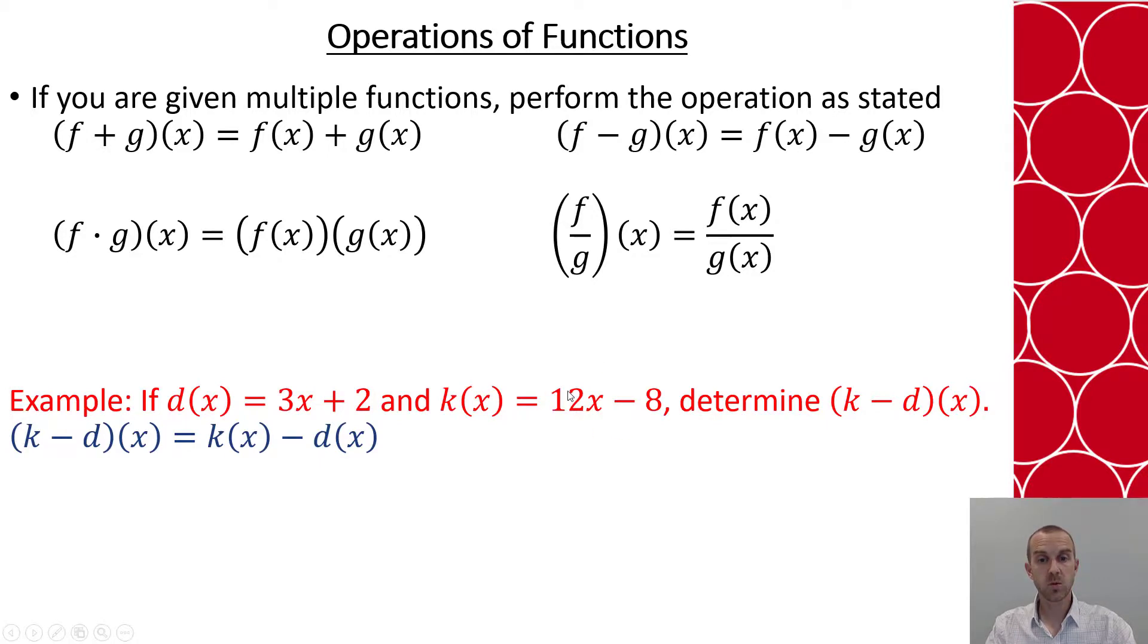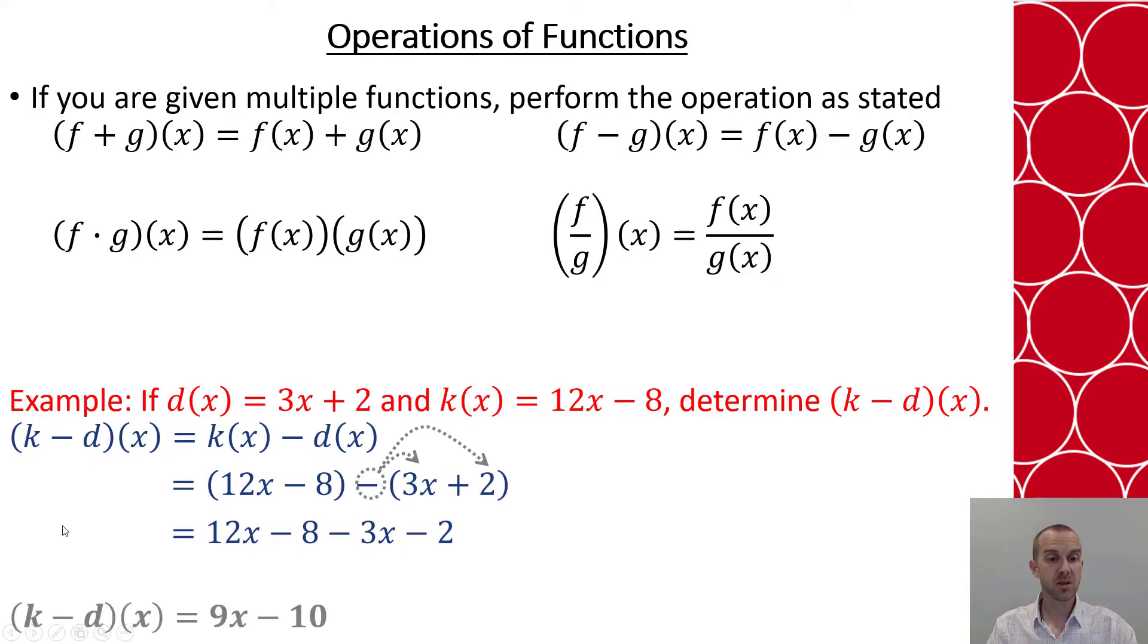Now I'll say, okay, k function, 12x - 8. d function is the 3x + 2. Now I'm going to simplify my expression. First thing, distribute that negative to both those terms. Now I have 12x - 8 - 3x - 2. I combine like terms and this should give me 9x - 10 because 12x - 3x is 9x. Negative 8 minus 2 is minus 10.